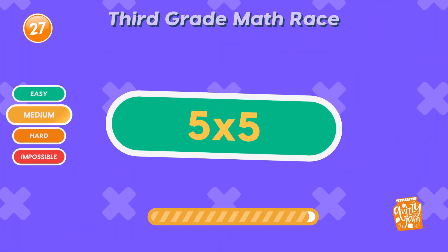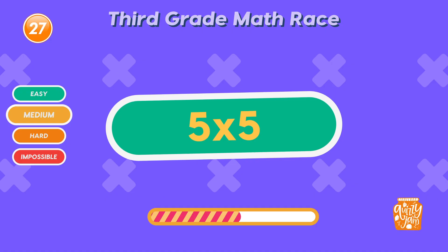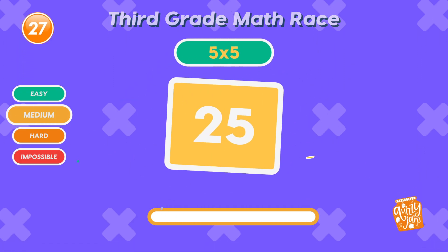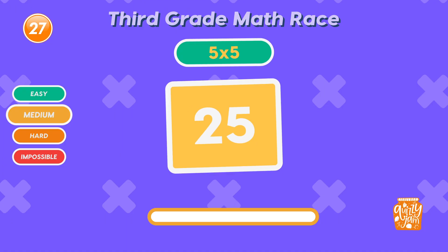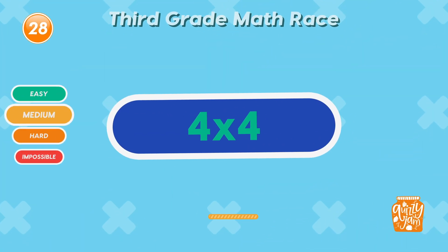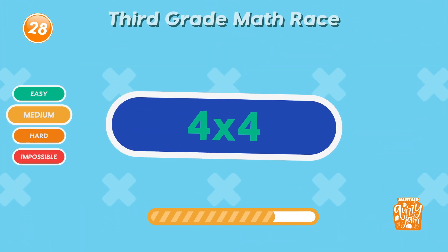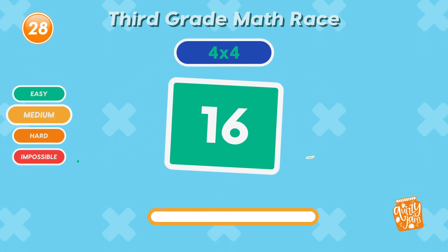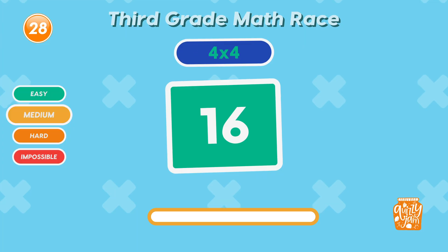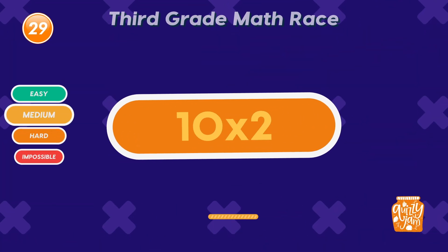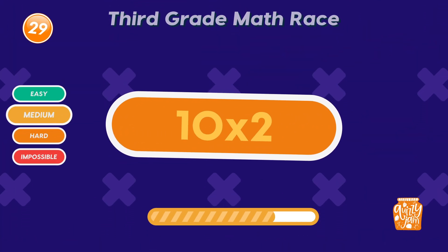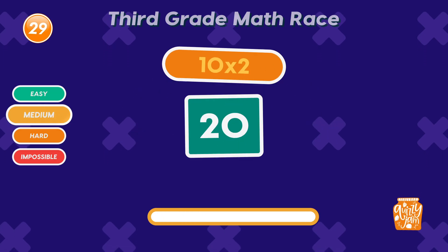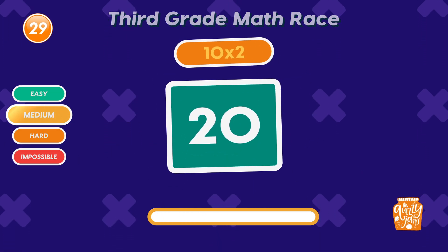What is 5 times 5? 25! You're squared away! What is 4 times 4? 16! What is 10 times 2? 20! Double digits, double win!